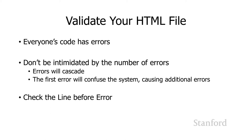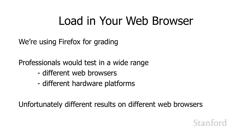Now we've validated our code and removed all the errors — cycling through validate, find errors, fix code, revalidate until they're gone. Next, we load it into the web browser. As mentioned, web browsers all act a little bit differently, but for the web pages we're making this is unlikely to be an issue. We want to use one standardized web browser — we're going to use Firefox. Get the latest version of Firefox, as that's what we'll be grading on.